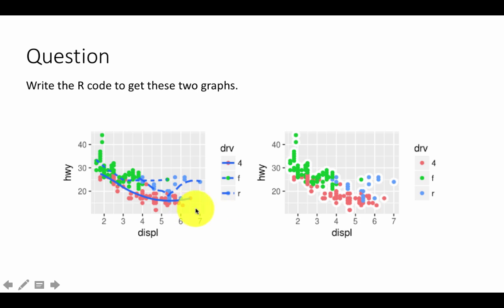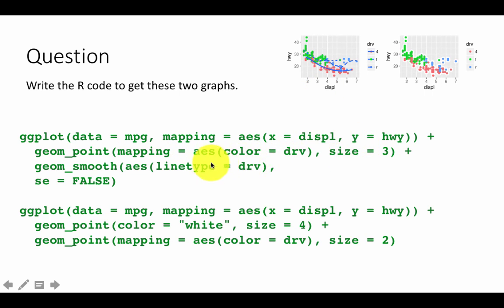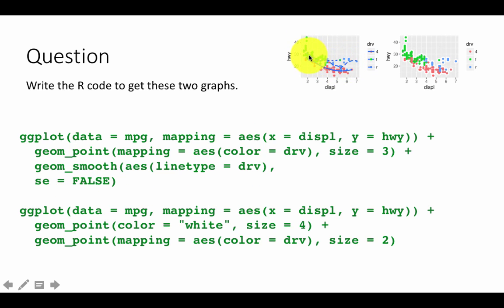Let's look at the code and confirm. Data and aesthetics x and y go in ggplot. For geom_point: color = drive inside the aesthetic, size = 3 outside. For geom_smooth: line type = drive inside the aesthetic, se = FALSE outside. So that's the code for this third chart.